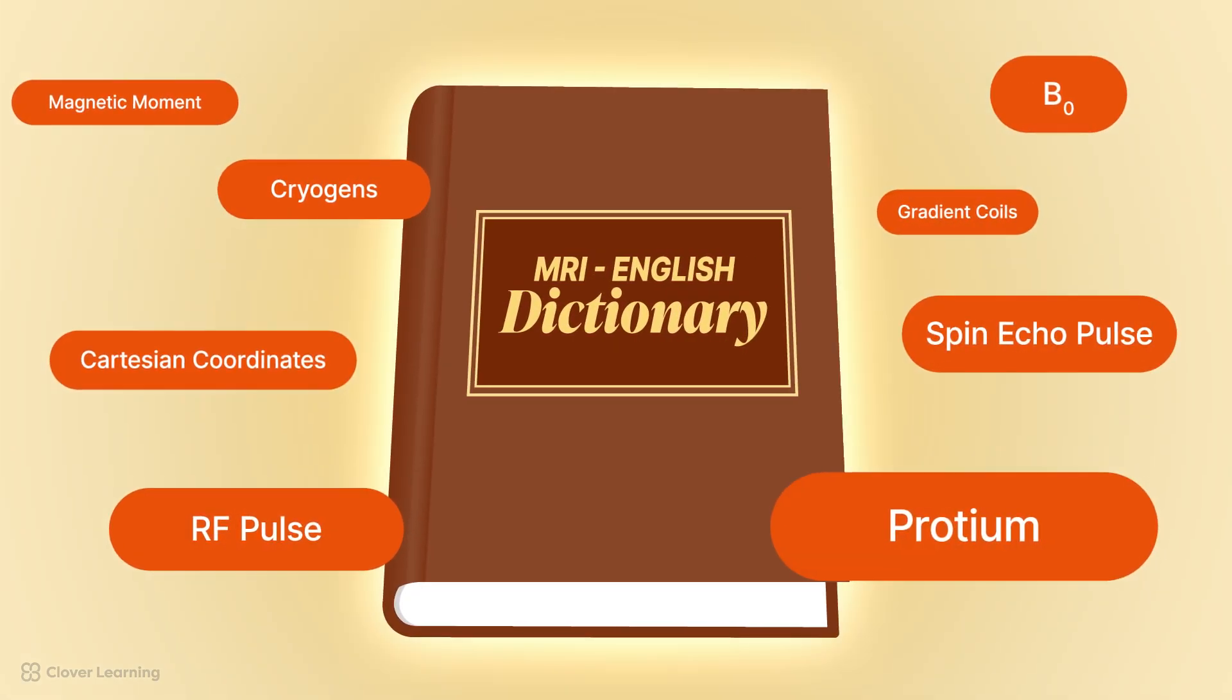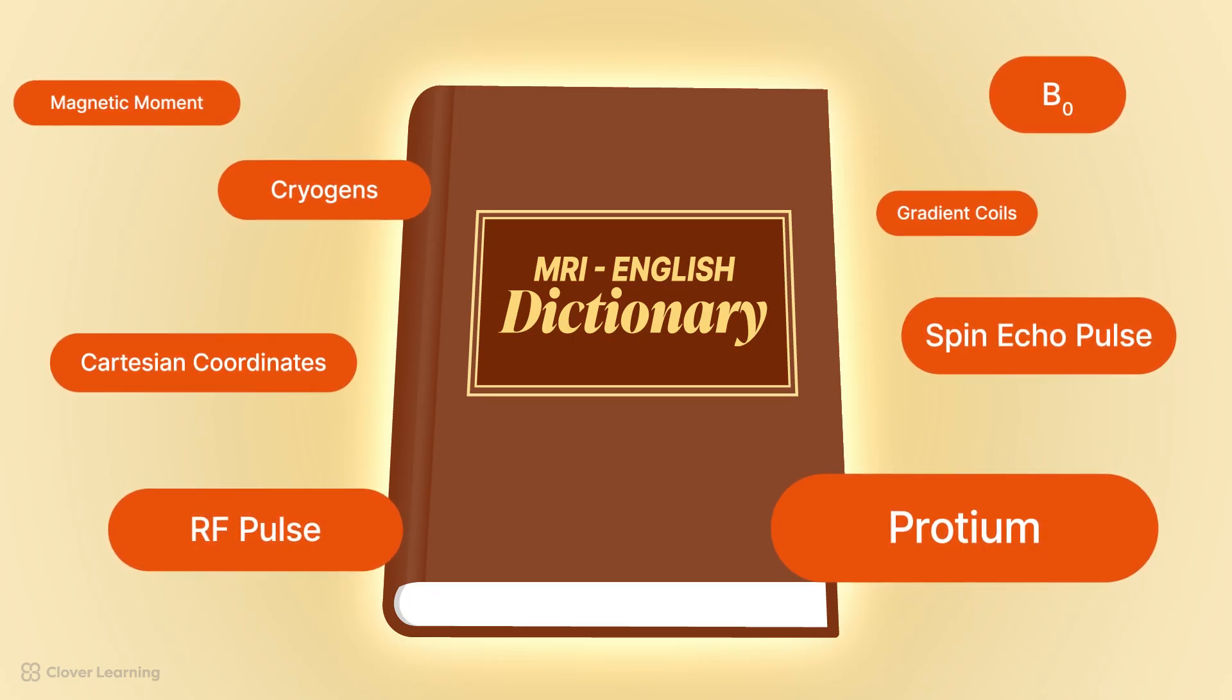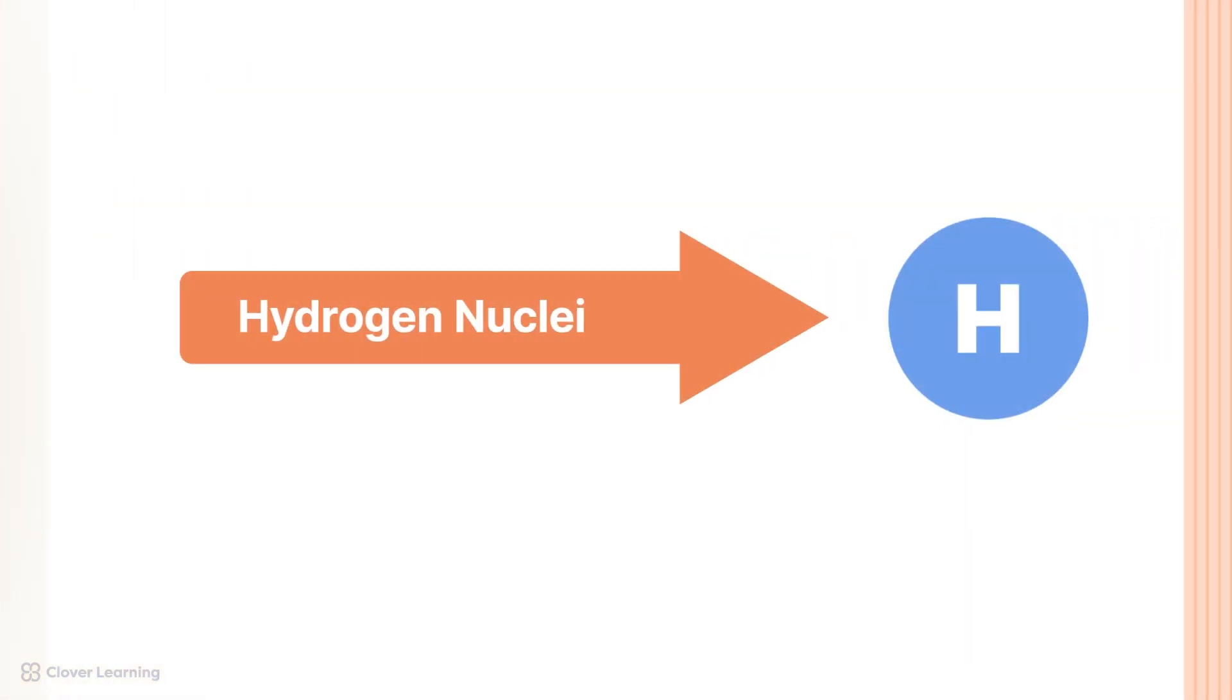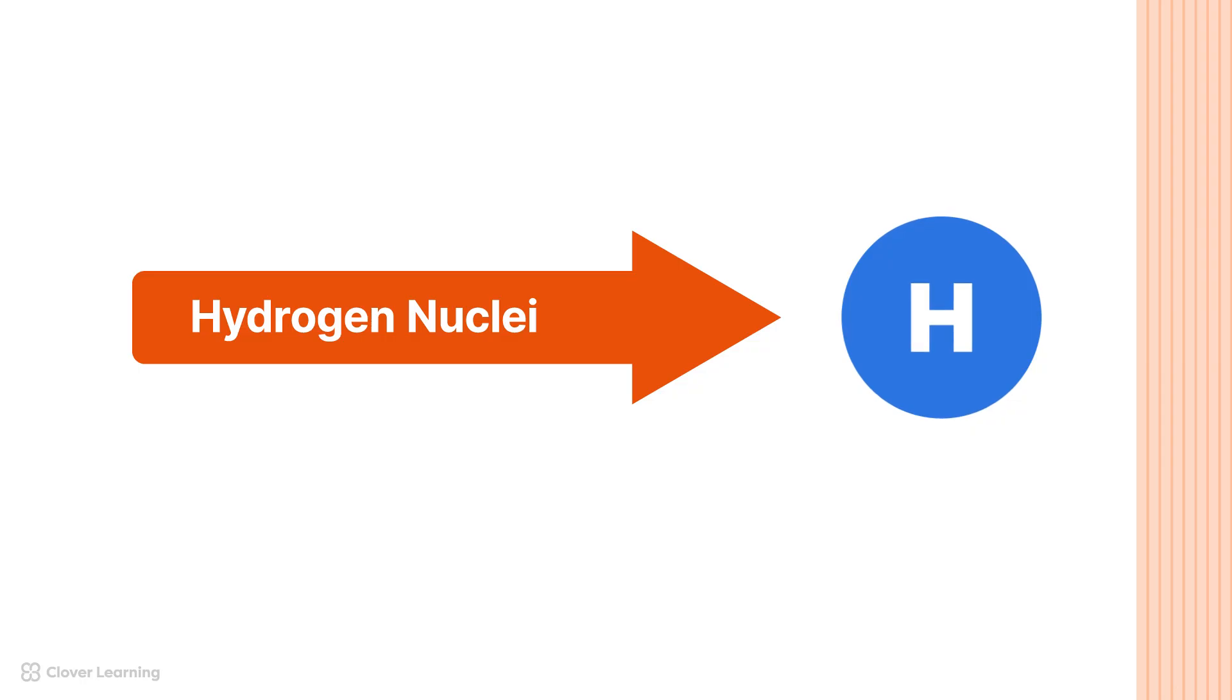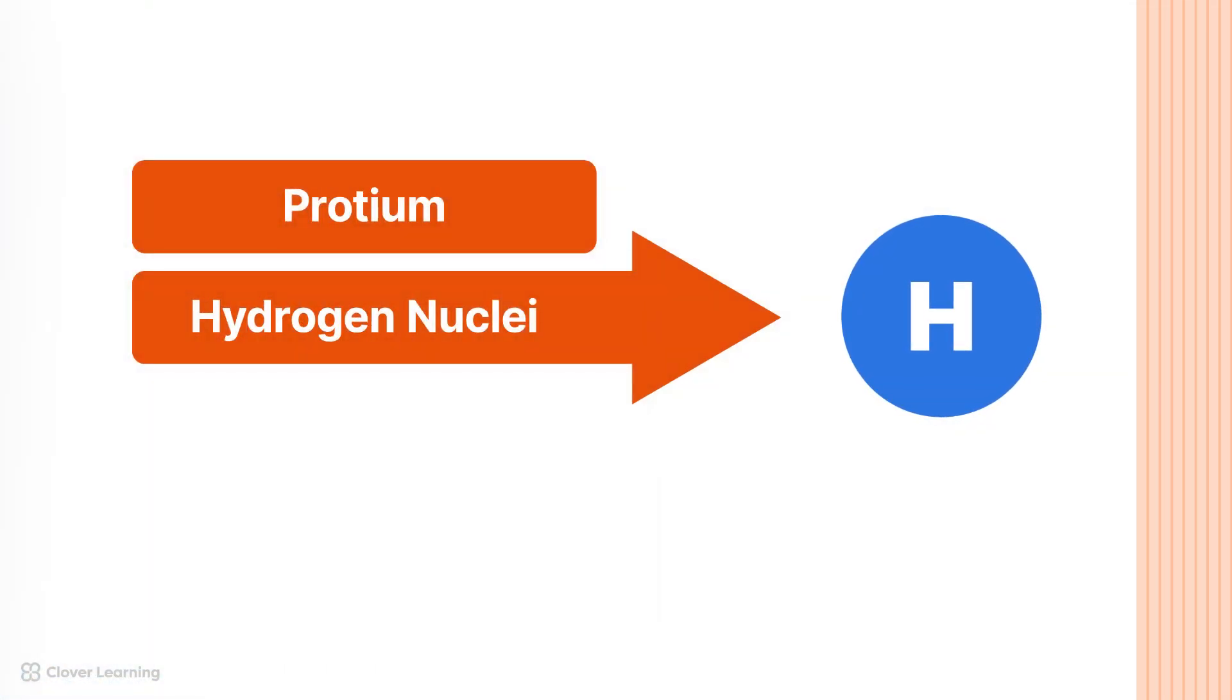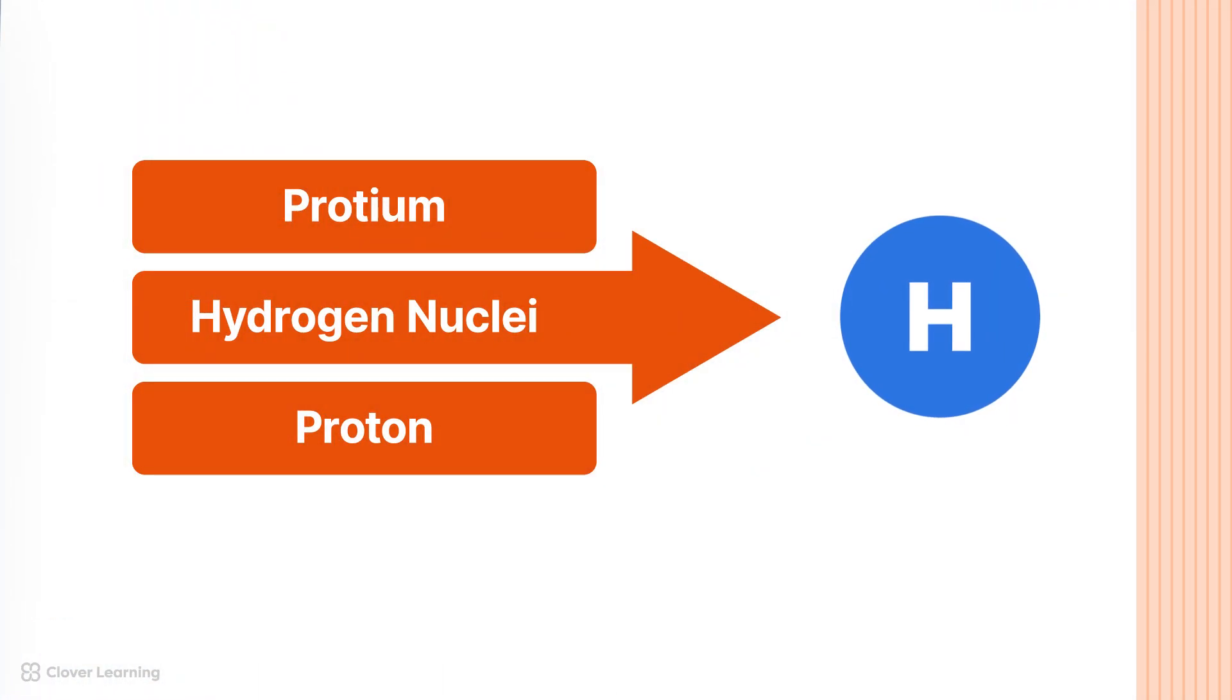Additionally, there are terms that are common to MRI that are necessary to understand. Discussing MRI can be somewhat akin to learning a new language, so it is important to familiarize yourself with these terms. First, let's discuss the hydrogen nuclei. We may refer to the hydrogen nuclei targeted in MRI as protium, because it is the most common hydrogen isotope, and it is the isotope we focus on. We also may refer to hydrogen nuclei as protons. Just know that, in the context of these lessons, hydrogen nuclei, protium, and protons may all be used interchangeably.